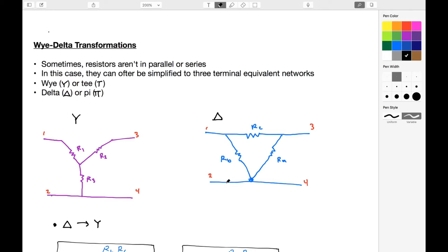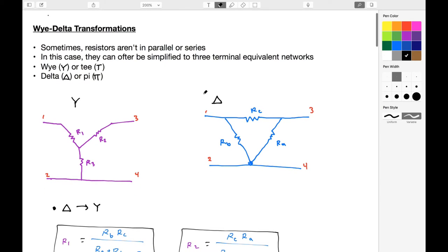And the two primary types are the Y or T. You can see that I could redraw a Y into a T. Or the delta or pi. And you can see in the left-hand side here, I show what a Y network looks like. There are three resistors, R1, R2, and R3. There are really three terminals because terminal 2 and terminal 4 are the same.